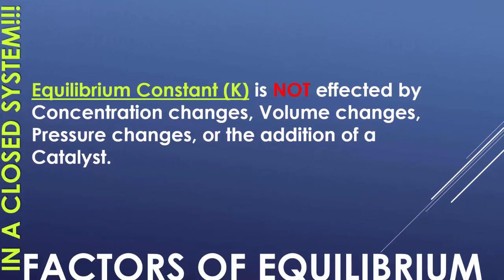When we talk about the equilibrium constant, it's not going to be affected by concentration changes because it's at equilibrium. It's not going to be affected by volume, so making the space bigger or smaller. It's not going to be affected by how much pressure you put on it or the addition of a catalyst, which would speed up any of the chemical reactions that are occurring inside your closed system.